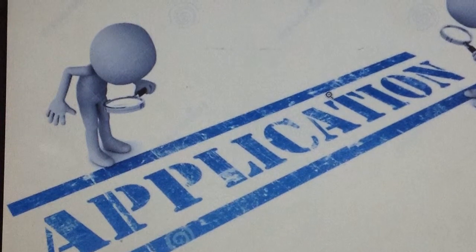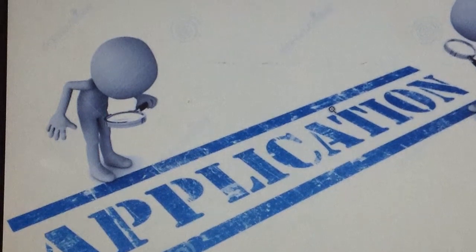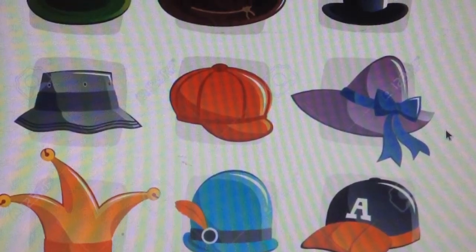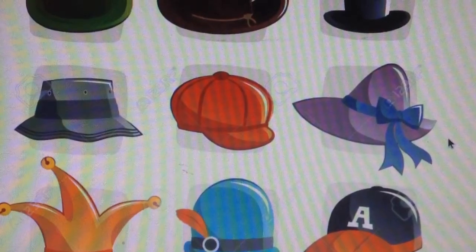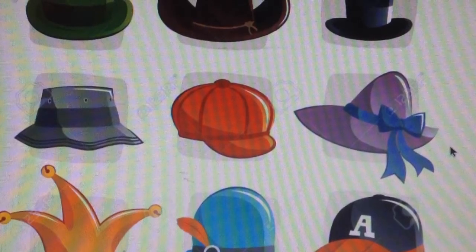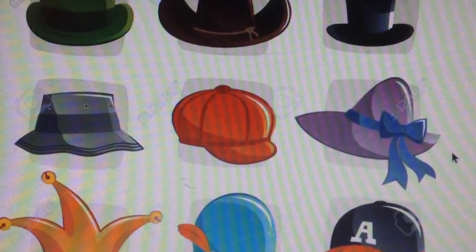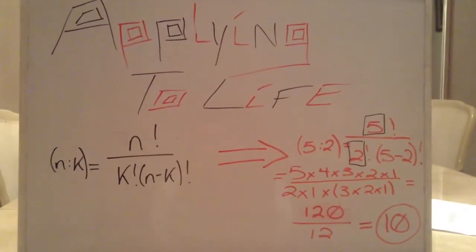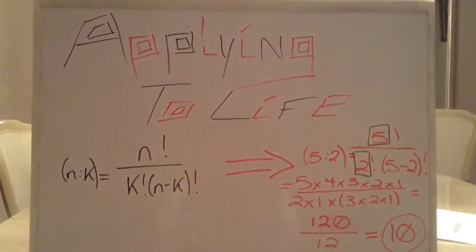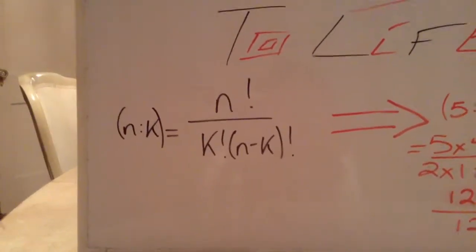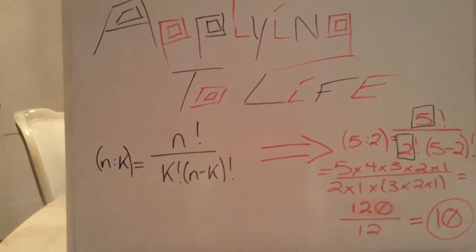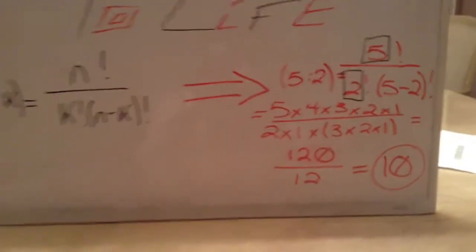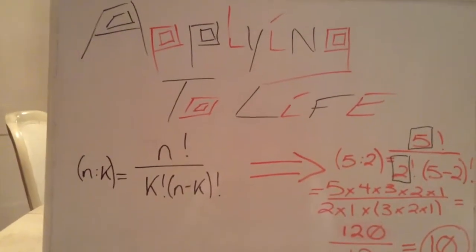Let's see how we can apply this to real life. For example, let's say you have a rack with five hats on it and you want to wear them in different ways as you pick two to wear. The question is, how many different ways can you pick two hats from a set of five? This is where the equation mentioned previously comes in handy. You substitute n for five and k for two, and your answer comes out to be ten. So there are ten different ways to pick two hats from a set of five.